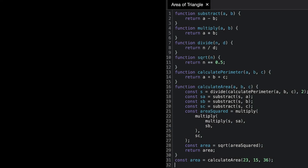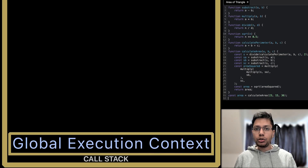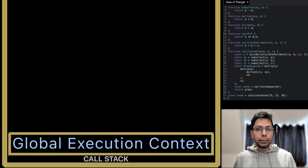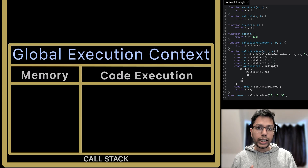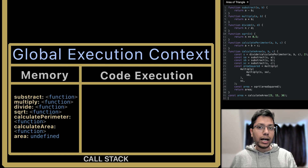In this example we calculate the area of a triangle using its sides. For that we need six functions — subtract, multiply, divide, sqrt, calculate parameter, calculate area — and a variable area, all declared in the global context. The global context is created, memory is assigned, area is set to undefined, and the functions are set with their respective references. Now calculate area is called, a context is created for it and it's pushed to the top of the stack. In the memory creation phase, the parameters a, b, and c have values set, while the variables s, sa, sb, sc, area squared, and area are all set to undefined. It also has access to the functions declared in the outer context.